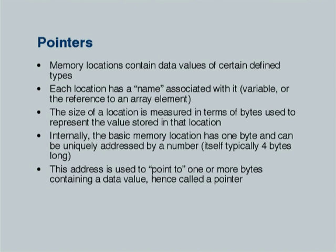In our simplified model of computing through Dumbo and drawers, while drawers represented the notion of locations fairly accurately, all drawers in a cupboard are typically of the same size. That unfortunately does not reflect the reality of memory allocation for different data values. In real life the basic memory location has one byte, and each byte can be uniquely addressed by a number. That address number itself is typically 4 bytes long — the size of a pointer is 4 bytes irrespective of whether it pointed to integer, float, short, double, or whatever.